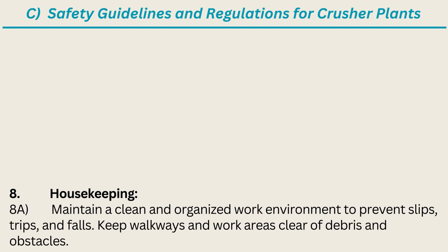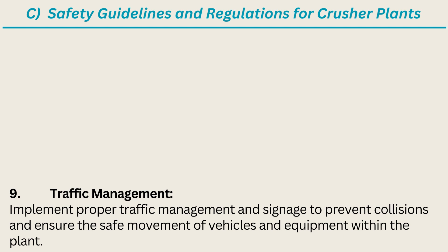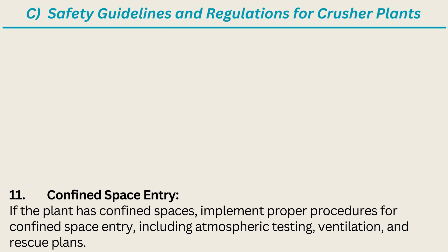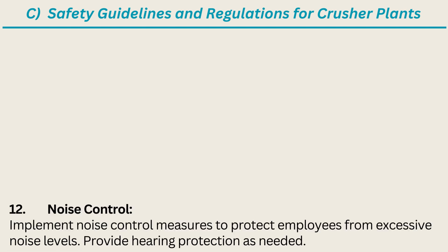8. Housekeeping. Maintain a clean and organized work environment to prevent slips, trips, and falls. Keep walkways and work areas clear of debris and obstacles. 9. Traffic management. Implement proper traffic management and signage to prevent collisions and ensure the safe movement of vehicles and equipment within the plant. 10. Fall protection. Provide fall protection equipment and measures for elevated work areas such as platforms, walkways, and elevated conveyors. 11. Confined space entry. If the plant has confined spaces, implement proper procedures for confined space entry, including atmospheric testing, ventilation, and rescue plans. 12. Noise control. Implement noise control measures to protect employees from excessive noise levels. Provide hearing protection as needed.